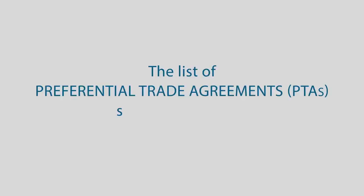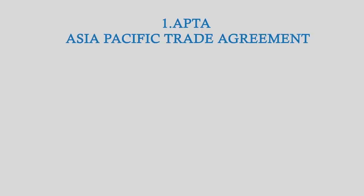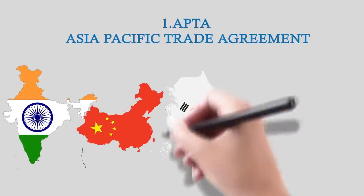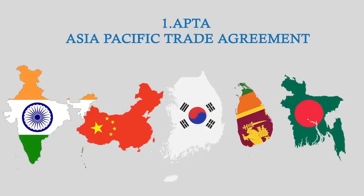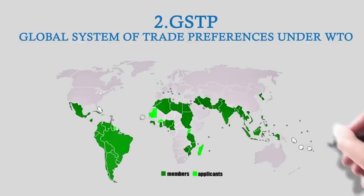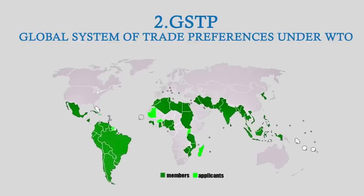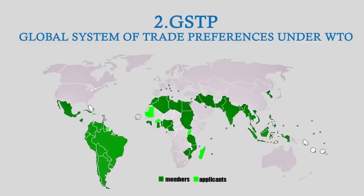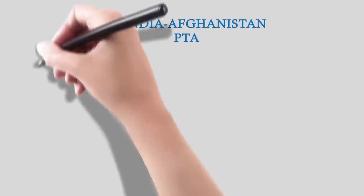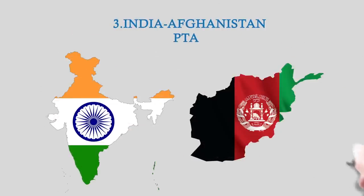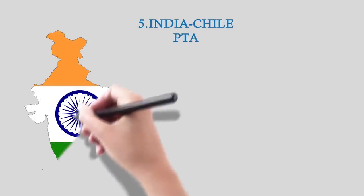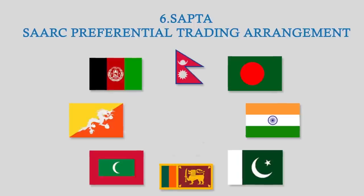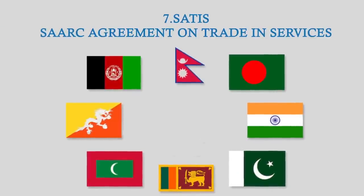The PTAs signed by India include: APTA (Asia-Pacific Trade Agreement), with member states India, China, South Korea, Sri Lanka and Bangladesh; GSTP (Global System of Trade Preferences under WTO), open to all member countries under the Group of 77; India-Afghanistan PTA; India-Mercosur PTA; India-Chile PTA; SAPPTA (SAARC Preferential Trading Agreement); and SATIS (SAARC Agreement on Trade in Services).